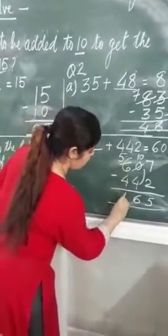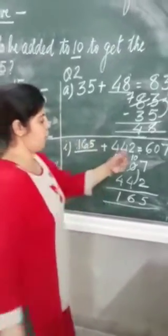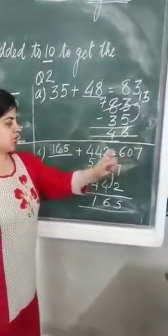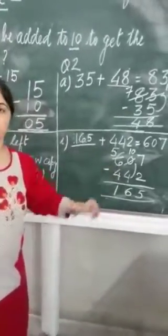And 5 minus 4? 1. 165 is to be added to 442 to get 607. That means, we have to solve it using subtraction.